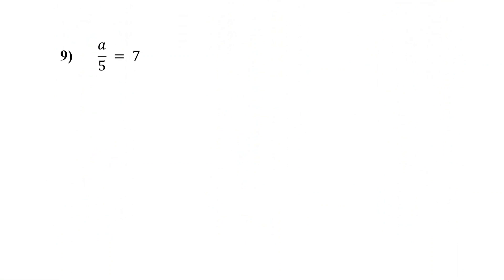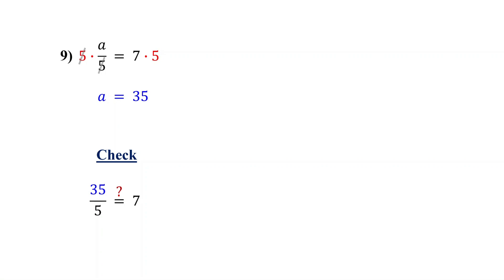Now what if the variable is divided by a number? The goal is still the same: to isolate the variable using the opposite operation. Here, a is being divided by 5. To get a by itself, we do the opposite of division — we multiply by 5. And we multiply both sides to keep the equation balanced. On the left, the 5s cancel out, leaving a by itself. On the right, 7 times 5 is 35. So the solution is a equals 35. Let's check: plug in 35 for a. 35 divided by 5 is 7. It checks out.